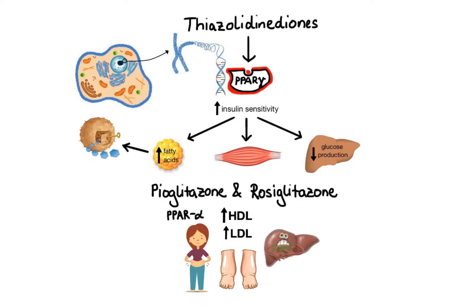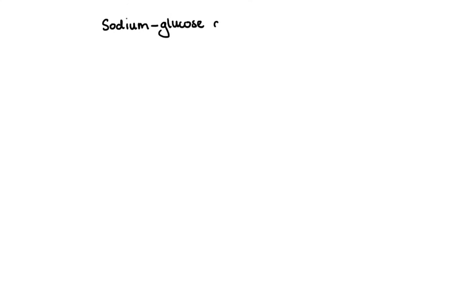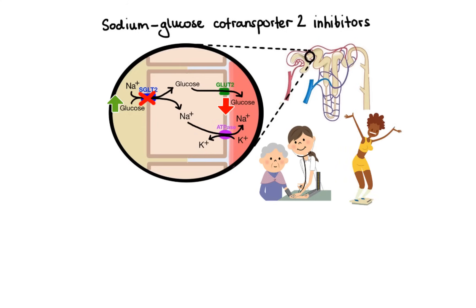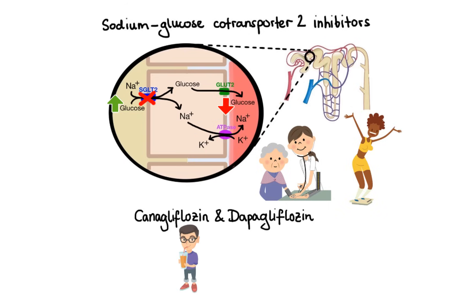Now let's discuss sodium-glucose cotransporter-2 (SGLT-2) inhibitors. These agents inhibit a glucose transporter located in the proximal convoluted tubules of the kidneys that is responsible for about 90% of glucose reabsorption. Inhibition of SGLT-2 leads to increased urinary glucose excretion and reduced blood glucose levels. The increase in glucose and sodium in urine generates mild osmotic diuresis, which may contribute to small reductions in blood pressure and weight loss. Drugs in this class include canagliflozin and dapagliflozin. Common side effects include thirst, increased urination, and increased risk of urinary tract and genital infections.